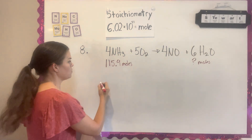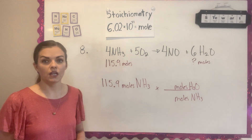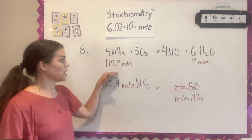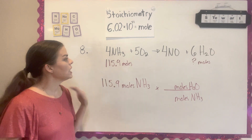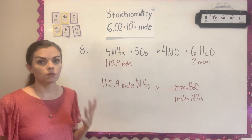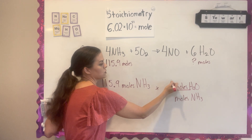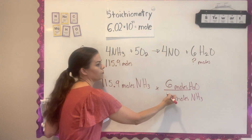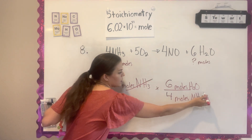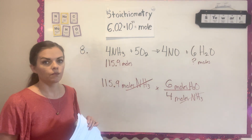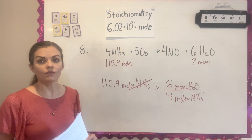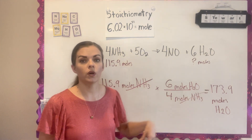Starting with what they gave me — 115.9 moles of NH3 — and converting that to moles of water. They already gave us moles, so we don't need to convert first. When going from moles of one part of an equation to moles of another, you use the coefficients to make a ratio. I have 6 moles of water reacting in a ratio of 4 of NH3, so I put water on top and NH3 on the bottom so NH3 cancels out. You calculate 115.9 × 6 ÷ 4, and your answer should be 173.9 moles of water.